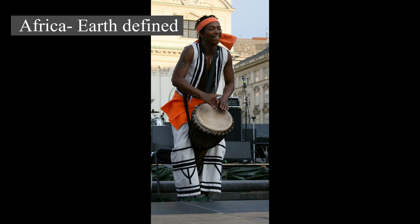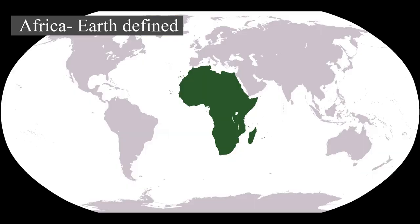Most of the continent lies in the tropics, except for a large part of western Sahara, Algeria, Libya and Egypt, the northern tip of Mauritania, and the entire territories of Morocco, Ceuta, Melilla, and Tunisia, which are located above the Tropic of Cancer in the northern temperate zone. In the other extreme, southern Namibia, southern Botswana, great parts of South Africa, the entire territories of Lesotho and Eswatini, and the southern tips of Mozambique and Madagascar are located below the Tropic of Capricorn in the southern temperate zone.